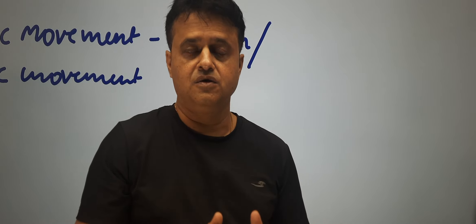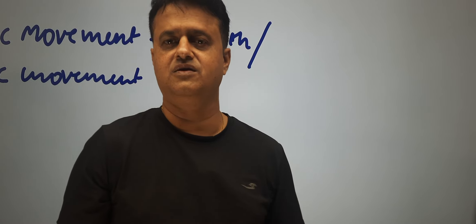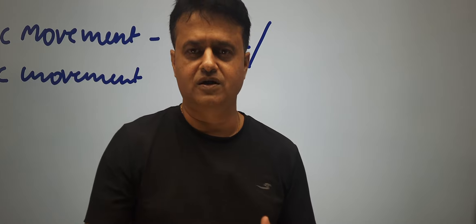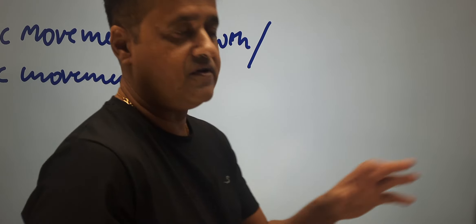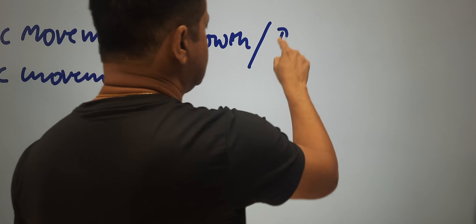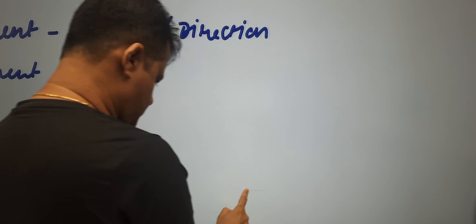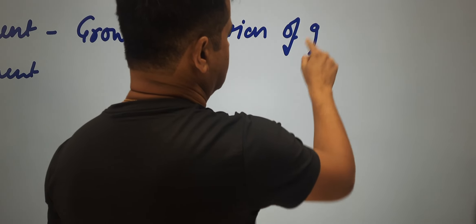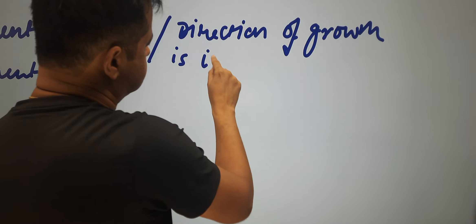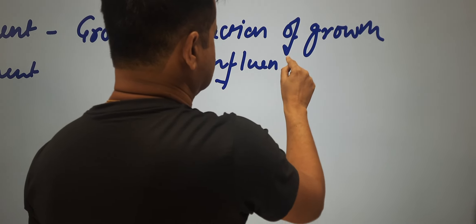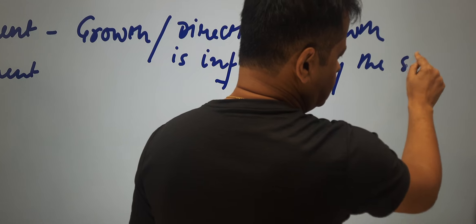The stimulus is a disturbance in the surroundings, which can be light, touch, gravity, or a chemical. The plant can grow either towards or away from the stimulus. This means the direction of growth is influenced by the direction of the stimulus.